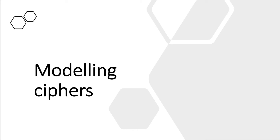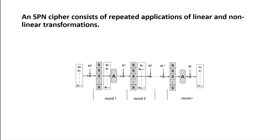We have now briefly introduced binary decision diagrams and compressed right-hand side equations, seen how they relate to Boolean functions and equations, and seen some essential operations needed for the attacking part. Next on our agenda is to see how we can use compressed right-hand side equations to model SPN-based ciphers. An SPN-based cipher consists of repeated applications of linear and non-linear transformations. The first step is to assign variables to certain states of the primitive — starting with the plaintext and ciphertext variables, which become constants when we later attack.